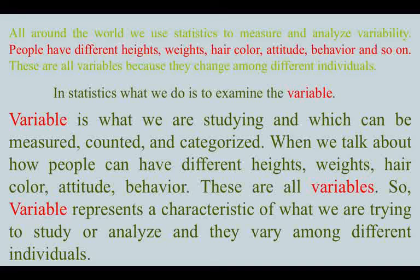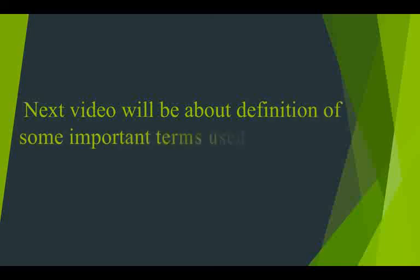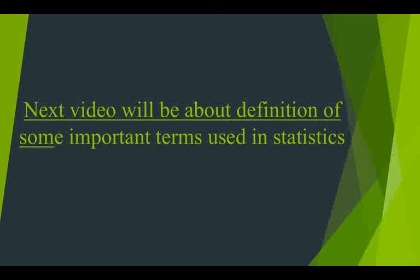We talk about how people can differ in heights, weights, food preferences, hair color, attitude, and behavior — these are all variables. A variable is the characteristic of what we are trying to study and analyze, and they vary among different individuals. In the next lecture we will go through definitions of important terms used in statistics in upcoming lectures. Stay tuned.